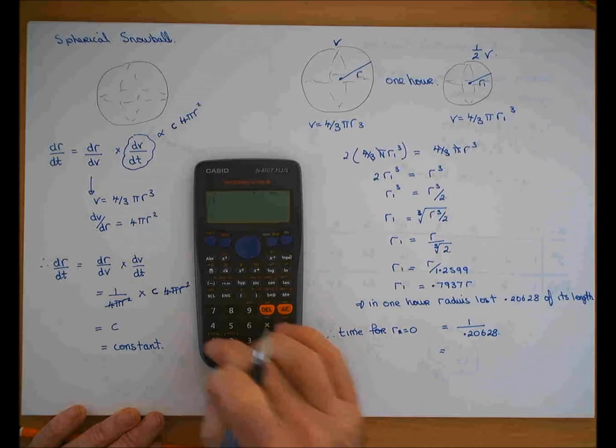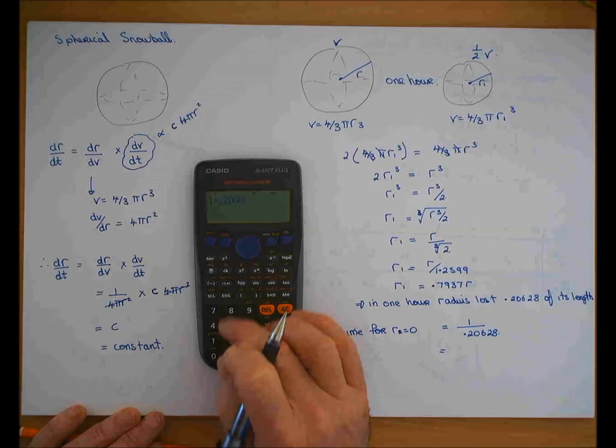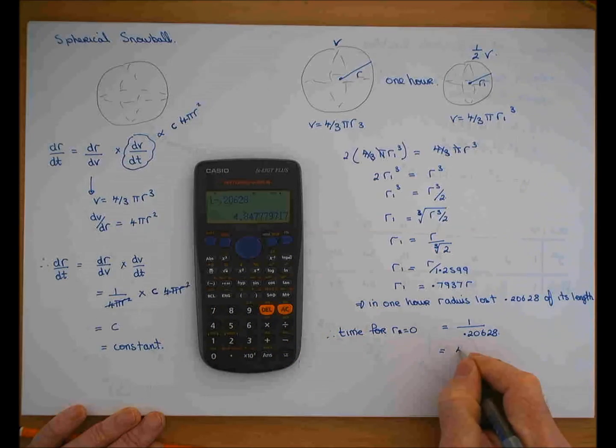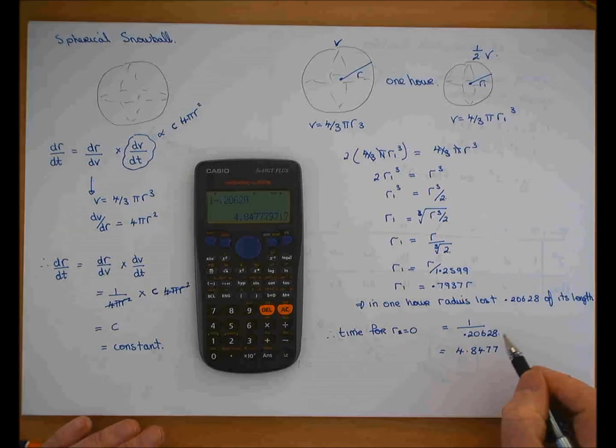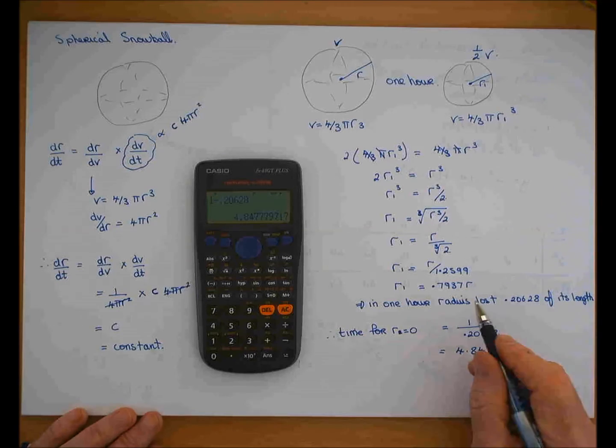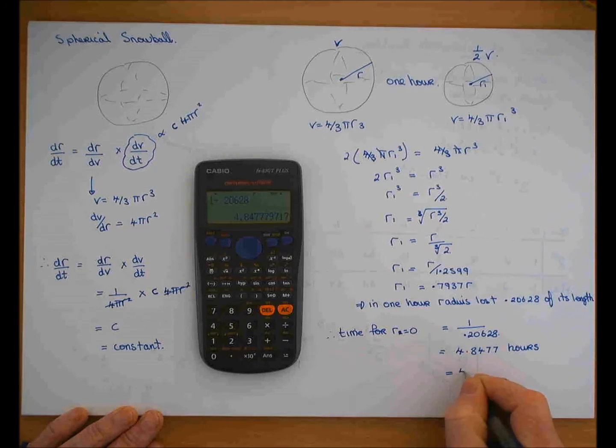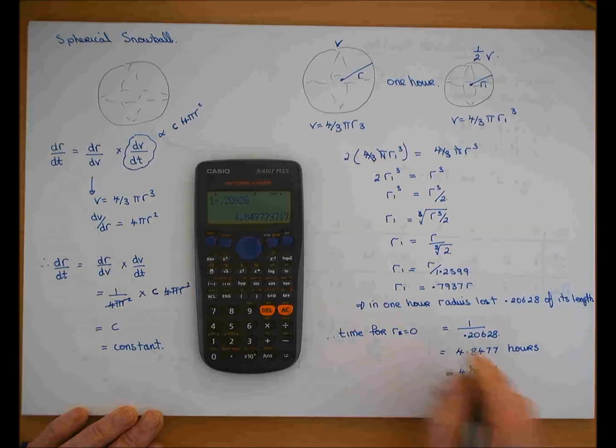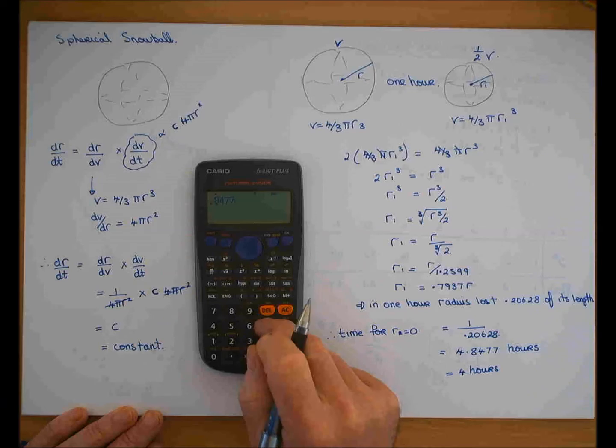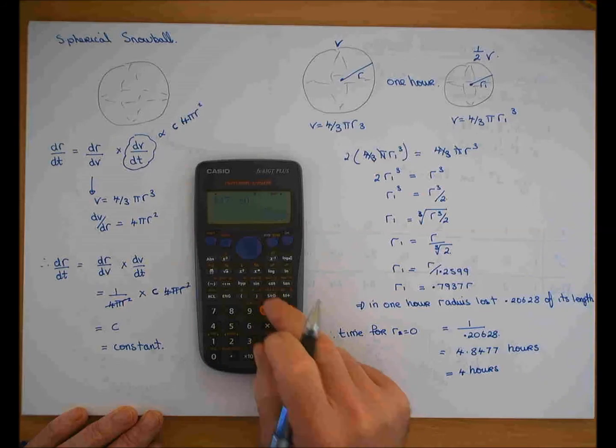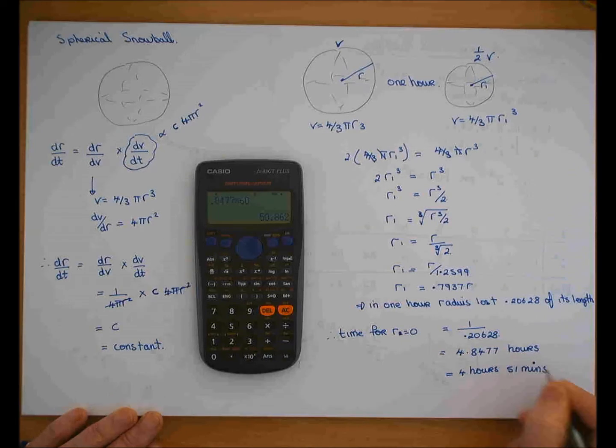So I have 1 divided by 0.20628 is equal to 4.8477. Now, each one of those, to lose that amount takes an hour, so it's that many hours. So that's 4 hours, and I'll get that 0.8477 times 60 to tell me how many minutes. 4 hours and 51 minutes. And that's how long it takes to go entirely.